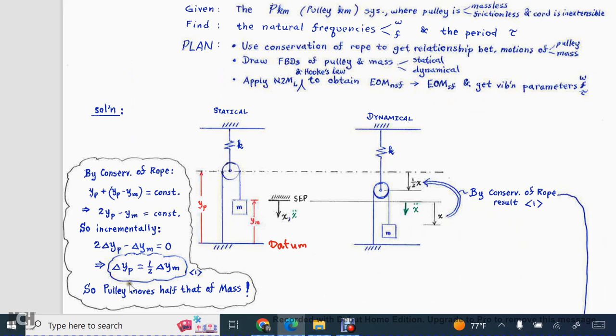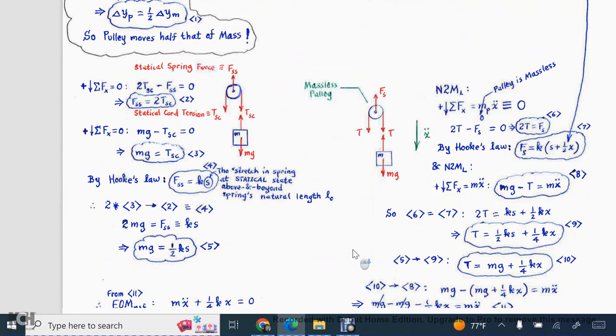Okay, so now that we've established that the pulley is moving at half that of the mass, we want to next go ahead and draw our free body diagrams. On the left pictures, I have the statical ones. On the right ones involving some acceleration, I have the dynamical ones. Let's begin on the left. So I've gone ahead and isolated the pulley as well as the mass, and I'm using a double subscript notation. So the FSS in this picture literally stands for the statical spring force. The T sub sc literally stands for the tension statically for the cord, and so on and so forth.